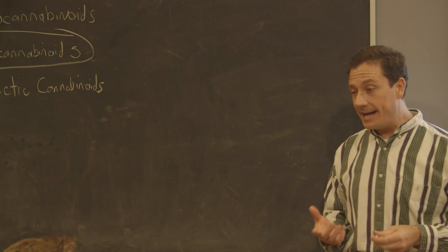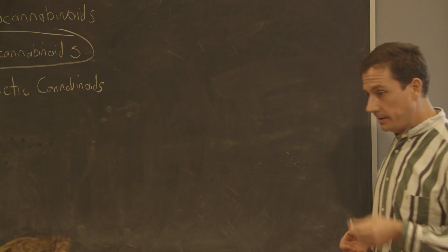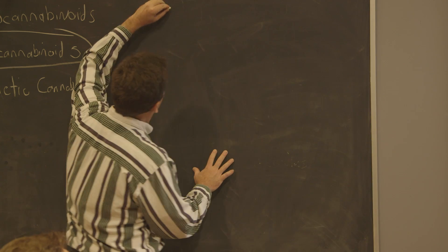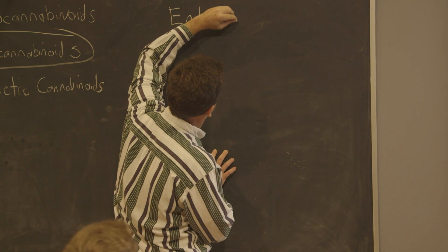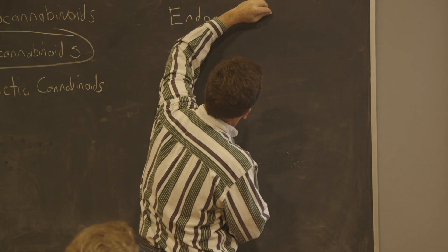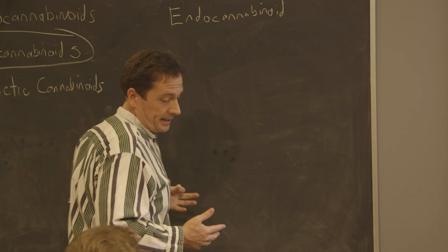But why do phytocannabinoids make you high? Cannabinoids are chemical compounds that activate cannabinoid receptors. Now these receptors are part of a system in the human body called the endocannabinoid system. This is a system that regulates a number of things.